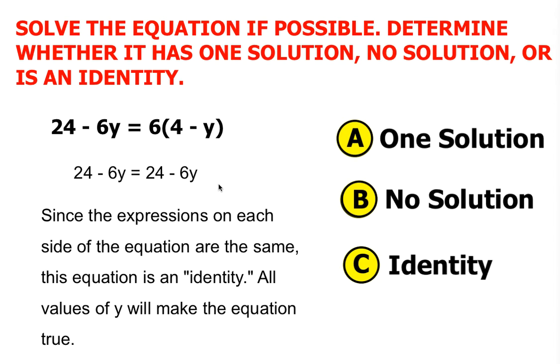So for example, if I say my y value is 0 and I substitute it into my original problem, I'm going to get the equation 24 equals 24, which is true. If I continue to change out different values of y, I will still get a true equation or true statement.